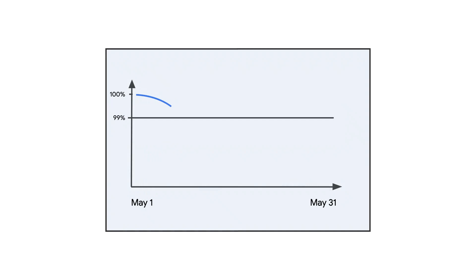If we have had 5,000 failures in the first few days of the month, we're still meeting our SLO technically, but the trend is not great. We need to know so we can fix the service before we miss the objective. Let's see how to set this up in Google Cloud Run.